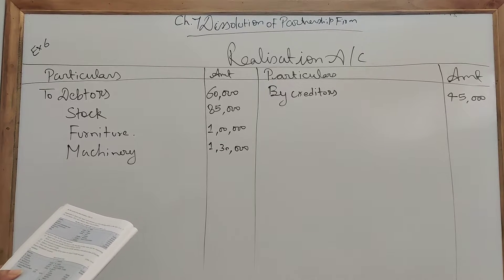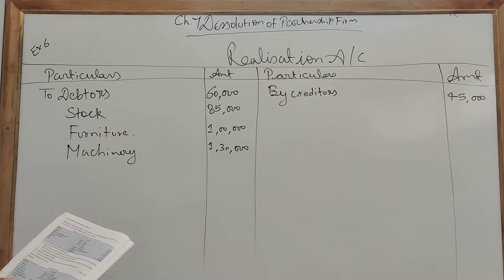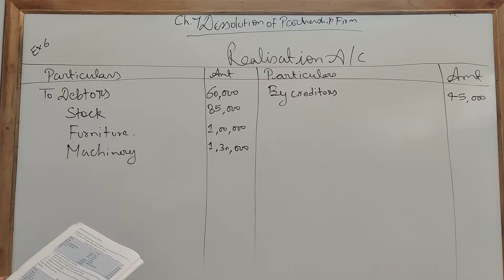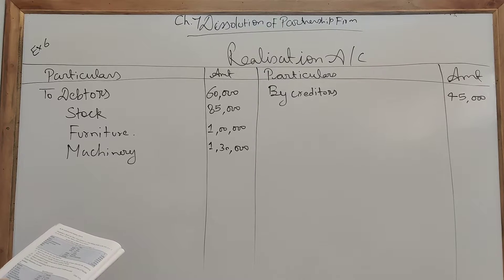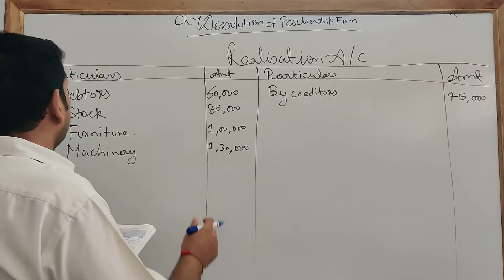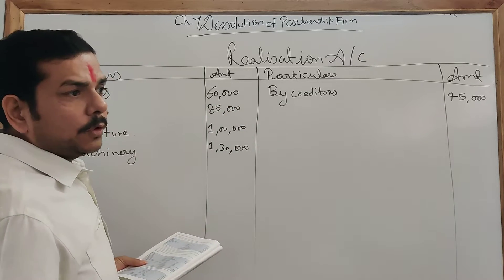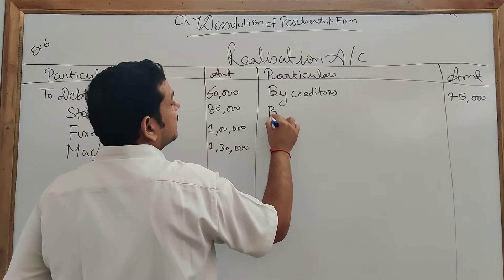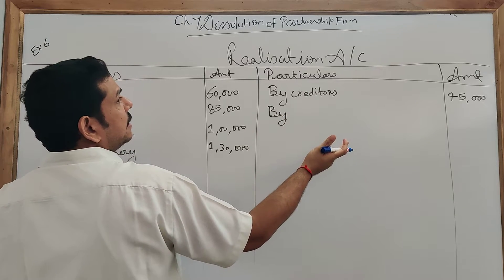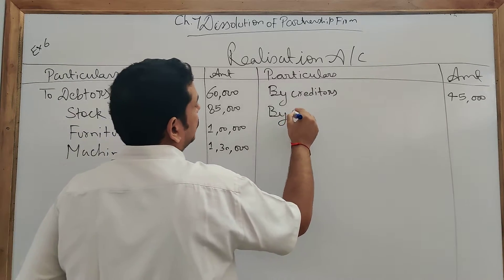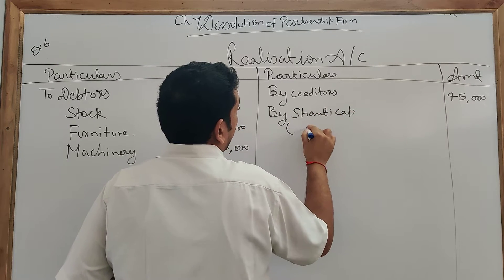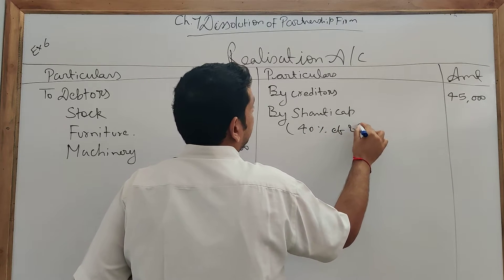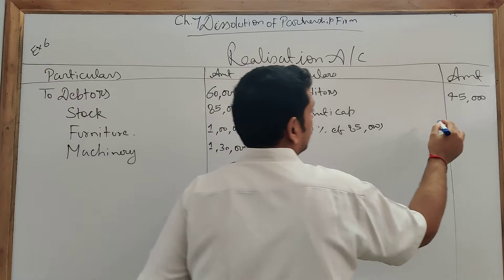Now come to the additional information. First: Shanti took over 40% of the stock at less than 10% of its book value, and the remaining stock was sold for 40,000. Stock is valued at 85,000 and Shanti took 40% of that. If any asset is taken over by any partner, his capital account is credited — so Shanti's capital account is credited. 40% of 85,000 comes to 34,000.